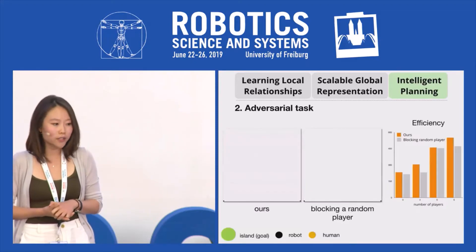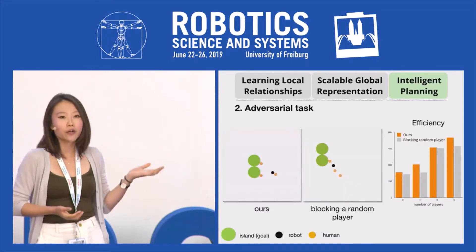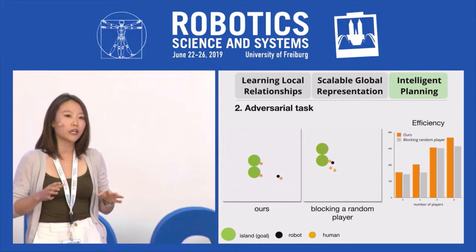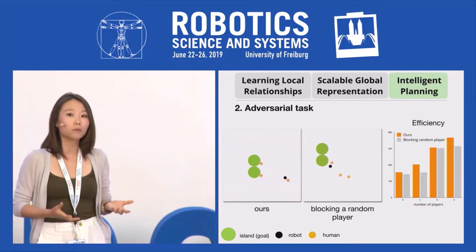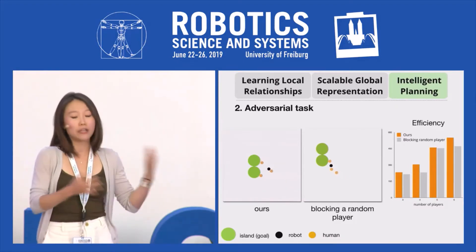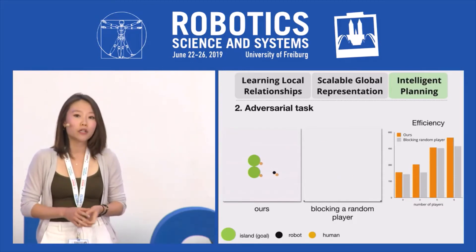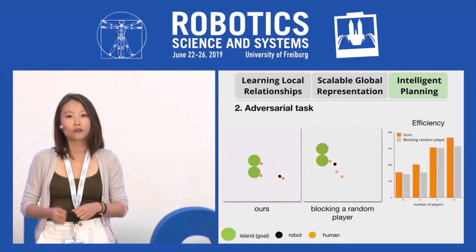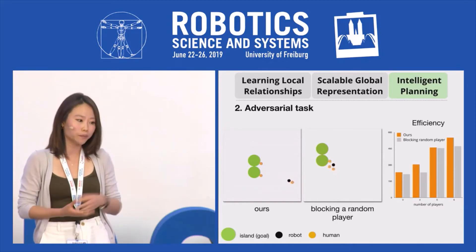We also tested our setting in an adversarial task, where the robot plans to prevent players from collaboratively reaching any goal. We show that with our framework, based on the graph representation, a robot is much more effective than a robot who randomly chooses the player to block, as shown in the middle.